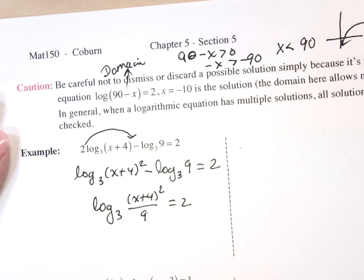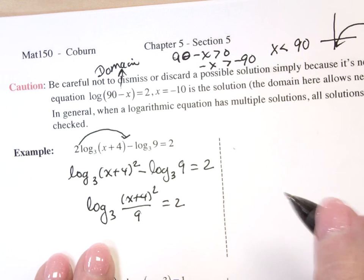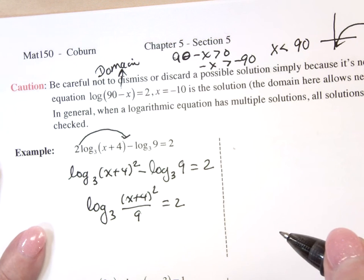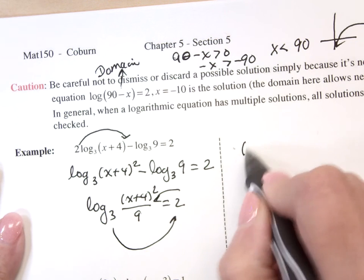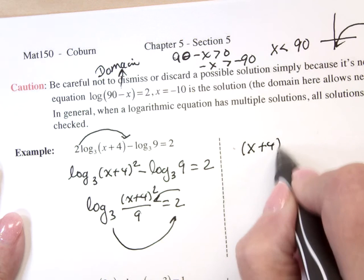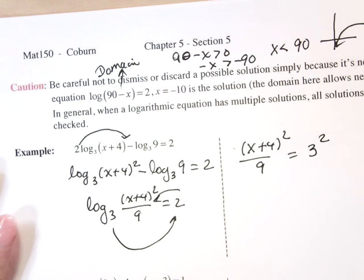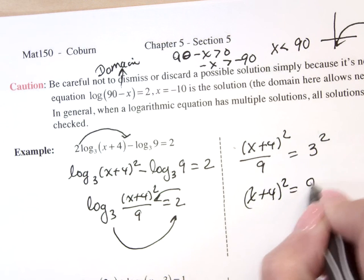Oh, that's interesting. Now, what do I need to do? This is the where, if you can't, if you don't do this, you're in trouble. Don't know how to do this. I need to rewrite as an exponential. So that (x+4)² divided by 9 equals 3². (x+4)² equals 9. And now what?